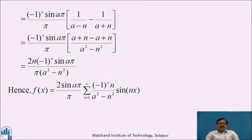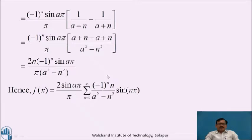Simplifying, we get (−1)ⁿ sin(aπ) / π into [1/(a−n) − 1/(a+n)], which equals (−1)ⁿ sin(aπ) / π into [(a+n − (a−n)) / (a²−n²)]. Taking cross multiplication, a cancels, giving 2n(−1)ⁿ sin(aπ) / [π(a²−n²)]. Hence f(x) = (2 sin(aπ)/π) × summation from n=1 to infinity of (−1)ⁿ · n / (a²−n²) · sin(nx).